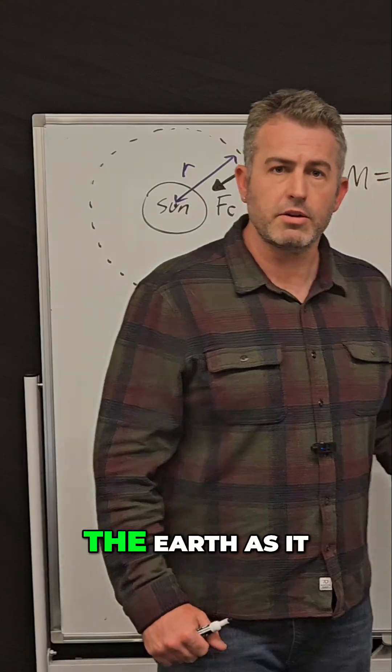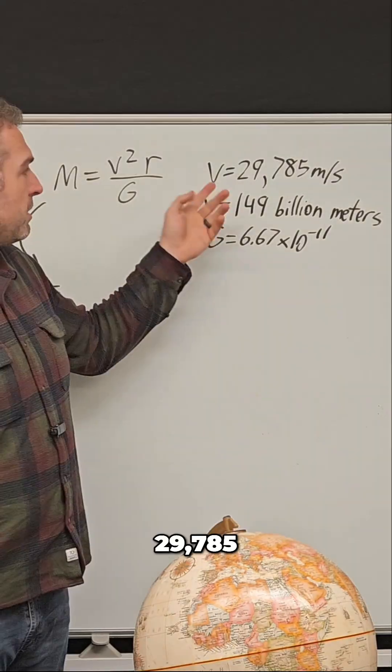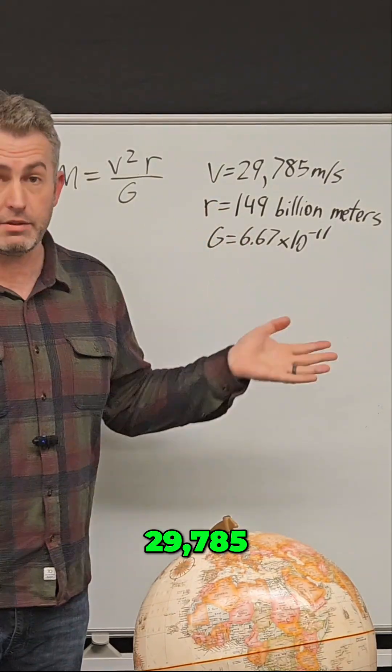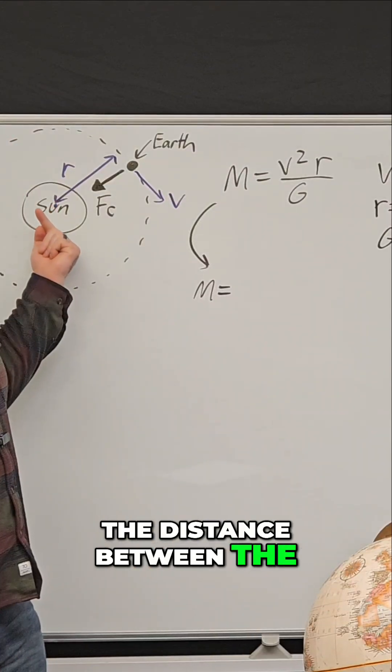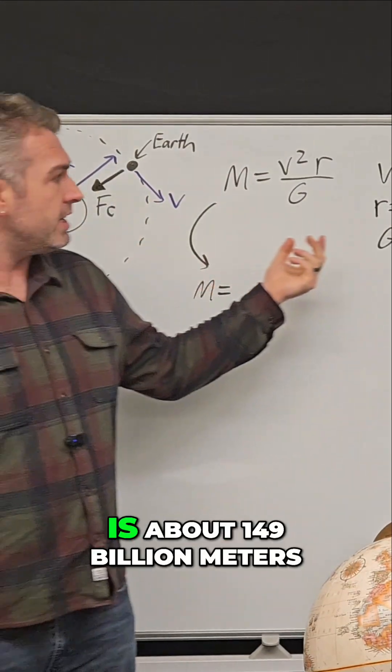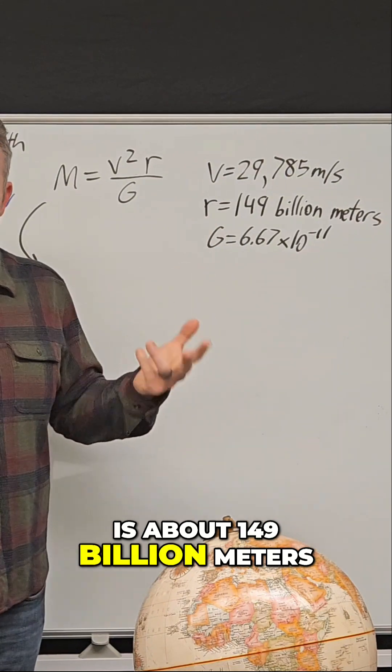The velocity of the earth as it orbits the sun is about 29,785 meters per second, very fast. The r in our diagram, the distance between the center of the sun and the center of the earth, is about 149 billion meters.